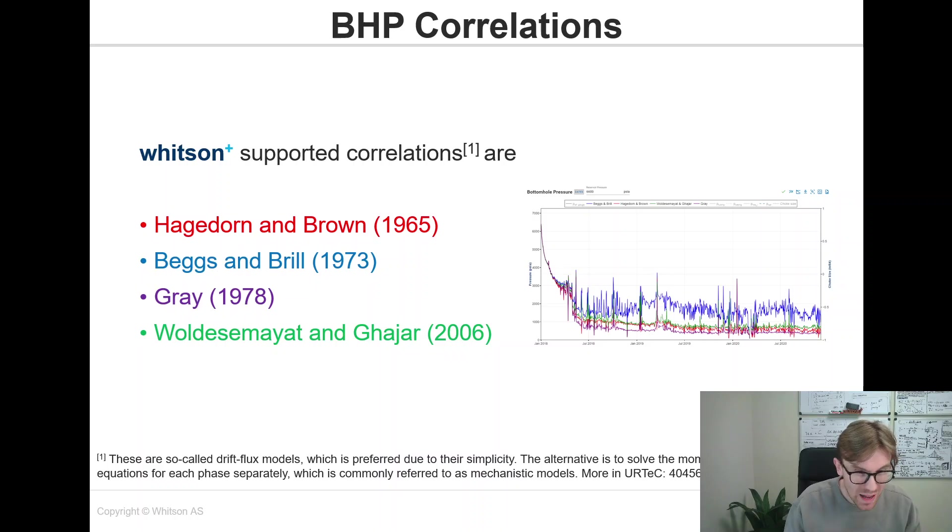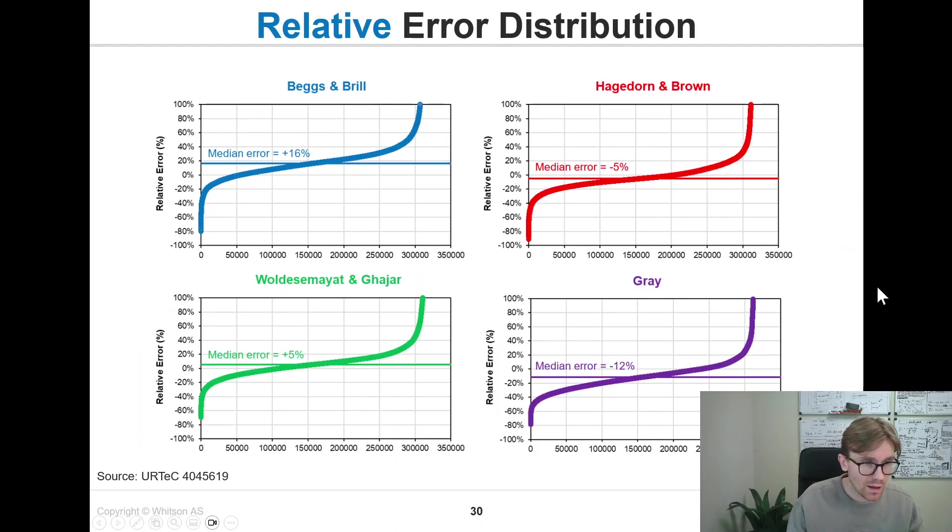But again, as I mentioned, we wrote this paper and analyzed over 300,000 data points. By far the biggest uncertainty was the input data. The difference in the correlations—it was clear that both Woldesemayet and Ghajar and Hagedorn and Brown did best, and then Beggs and Brill would always overpredict, and Gray would underpredict. But all of these are still within engineering error. Where you can get huge differences, like over 100% differences, is if your input data is not correct. When I'm talking about input data, I'm typically talking about flow paths versus time, or potentially errors in the actual sizes of the tubing and the casing.